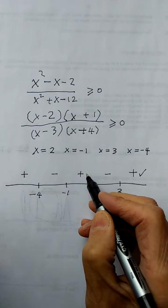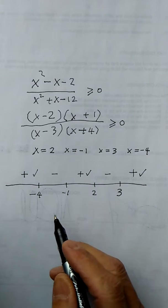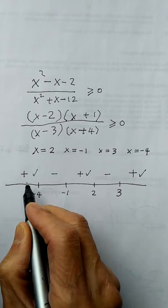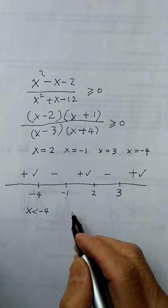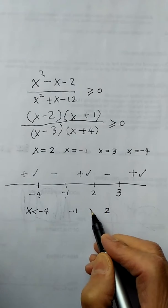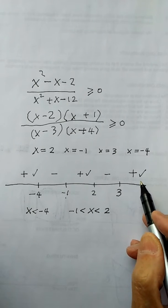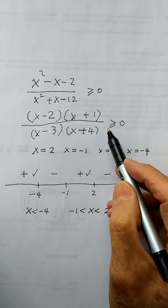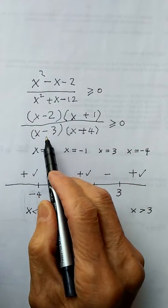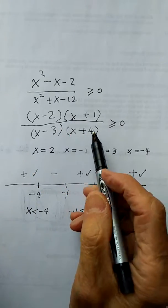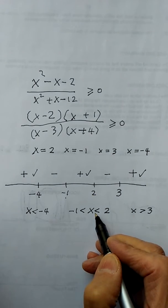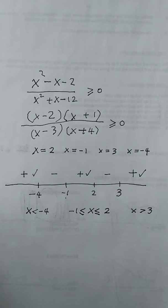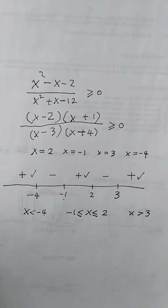So I want this part, this part, and this part. The answer right away is: x is less than negative 4, then between negative 1 and 2, and x is larger than 3. For the equal sign, you only include zeros from the numerator — not the denominator, since denominator equals 0 is undefined. So include x equals 2 and x equals negative 1. That's the answer — very simple using the shortcut.